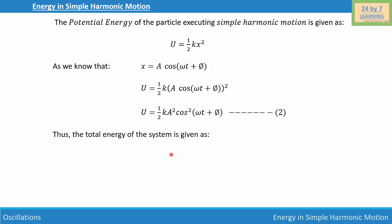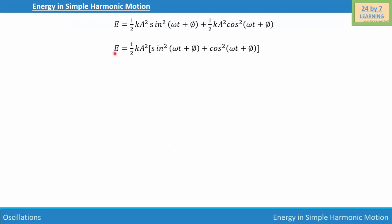Now we find the total energy of the system: E = potential energy + kinetic energy. Substituting equations one and two, we get E = ½kA² sin²(ωt + φ) + ½kA² cos²(ωt + φ). Since ½kA² is common, we factor it out: E = ½kA²[sin²(ωt + φ) + cos²(ωt + φ)].